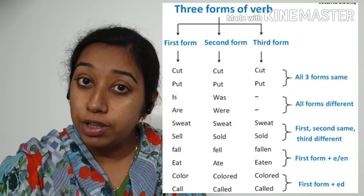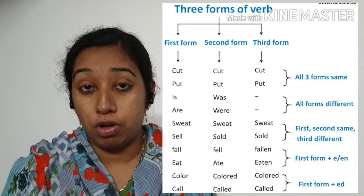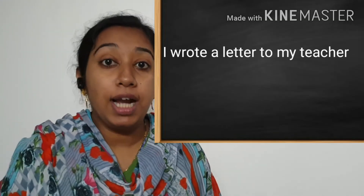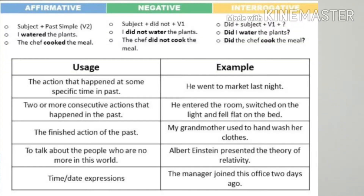Verb 1: write. Verb 2: wrote. Verb 3: written. That was a quick reminder to you all. As I told you children, the event started as well as ended in the past — that is called simple past tense. Remember, we use the second form of the verb in a simple past tense. Example: I wrote a letter to my teacher. 'Wrote' — simple past tense.